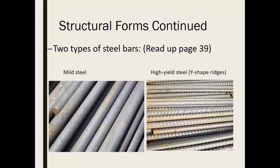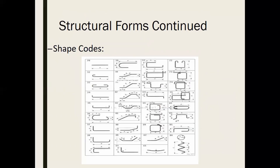That bond is important. There are two types of steel bars: mild steel, which has no ridges on it, and high tensile, which has ridges. You can read more on page 39 of your textbooks. These shape codes are used whenever you do work on buildings and formworks, so you'll know what bending number you are working on.